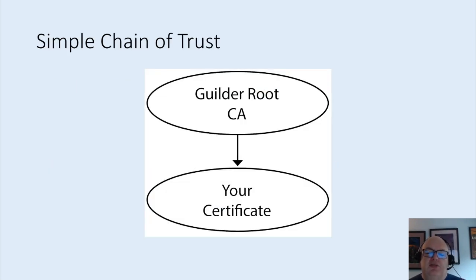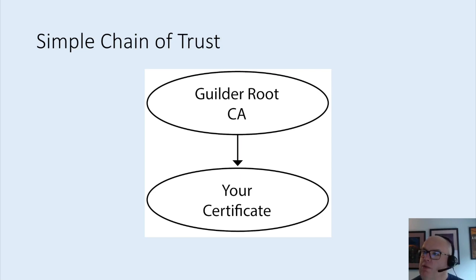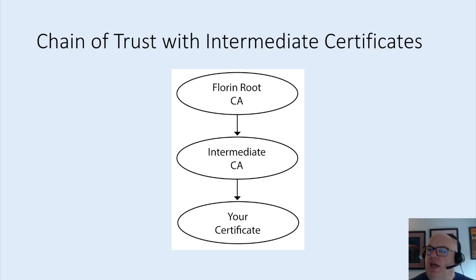Certificates are used through something called the chain of trust. In a simple chain of trust there's a company whose root certificate we trust and they have signed our certificate. Certificate validation is finding a path between the certificate and a trust anchor. What's more realistic now is where the root CA has its certificate, it signed an intermediate certificate, and that intermediate certificate in turn signs yours. If you're running an application, your application must provide the intermediate CA certificate — it's often called a chain file. Without that, your application will error.